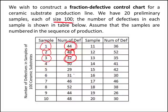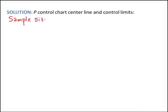We'll put these values on a p chart, and now we need to derive how to determine the center line and control limits. On the following slide, I'll derive how we get these control chart limits, because it's a bit complicated if you don't understand the reasoning behind them. We know each sample we collect is size 100. Let the random variable D represent the number of defectives per sample.